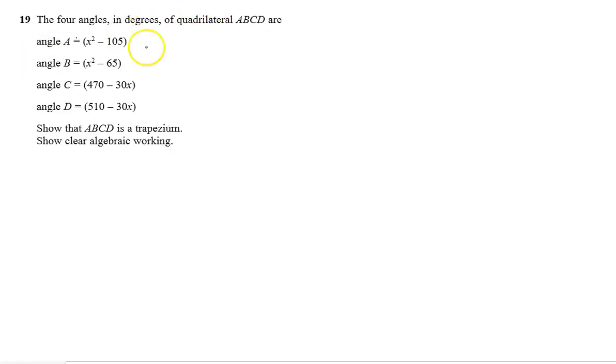This is the last question of 4HR, January 2018. The 4 angles in degrees of a quadrilateral are given. We know that angle A plus angle B plus angle C plus angle D is equal to 360 degrees. We have to show that it's a trapezium. Let's see if we add it.